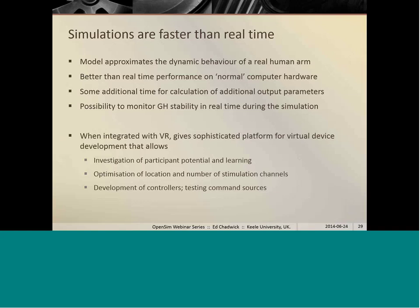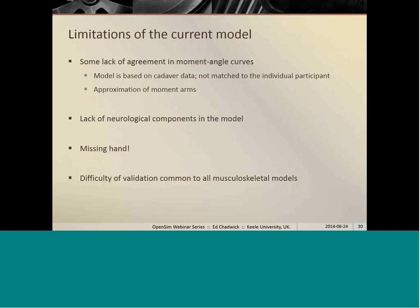There are still some limitations of course. We saw a little bit of lack of agreement in the moment-angle curves between the model and the published data. As I said, the model is based on cadaver data and it's not scaled to match individual participants. So we might expect to see some differences as well. That's something we need to work on. Of course, we're approximating the moment arms throughout the workspace using polynomials rather than calculating the exact wrapping in real time during the simulation as you would normally do using OpenSim for forward dynamics simulations.